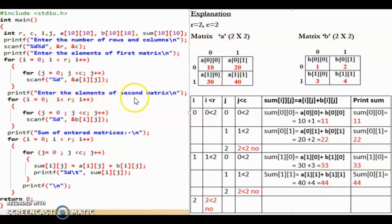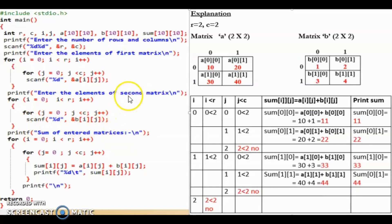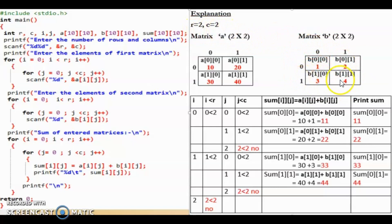Next, it asks the user to enter elements of the second matrix. Again, a nested for loop is used — the outer loop from i=0 until i less than r, and the inner loop from j=0 until j less than c. Values are taken using scanf and stored in array b. Consider matrix B with elements 1 at b[0][0], 2 at b[0][1], 3 at b[1][0], and 4 at b[1][1] — giving 2 rows and 2 columns.